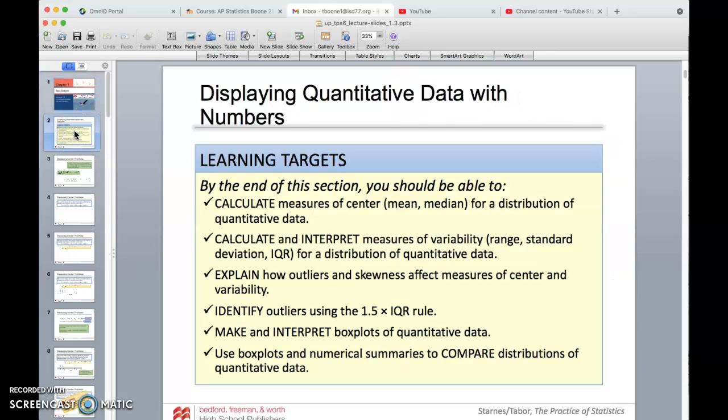We want to be able to calculate measures of center. We've done that before. We've used the calculator to do that. Calculate, interpret, variability, so we talked about range, standard deviation, interquartile range. We've done that before in LH2. Explain how outliers affect that. That's something we'll hit again, and then when we get into the second part, we'll get into the part B part. We'll get into the 1.5 times the interquartile rule. We'll interpret box plots. We've done those before, and then use those to compare distributions. A lot of things that we've done before, but we'll kind of clean up and reiterate those types of things here.